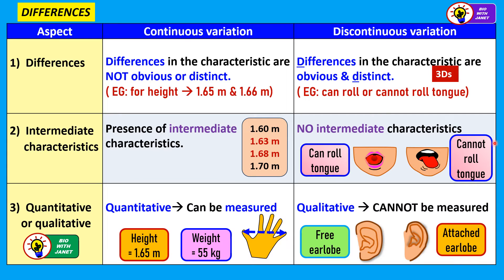Next — is the variation quantitative or qualitative? Continuous variation is quantitative, meaning it can be measured. You can measure the height of a person, the weight, and the hand span. For discontinuous variation, it is qualitative, meaning it cannot be measured — we just look at the feature or characteristic. For example, free earlobe and attached earlobe is a qualitative type of property. Either the earlobe is free — not attached directly to the face — or it is attached. This is one way to differentiate: continuous variation can be measured, but discontinuous variation cannot.